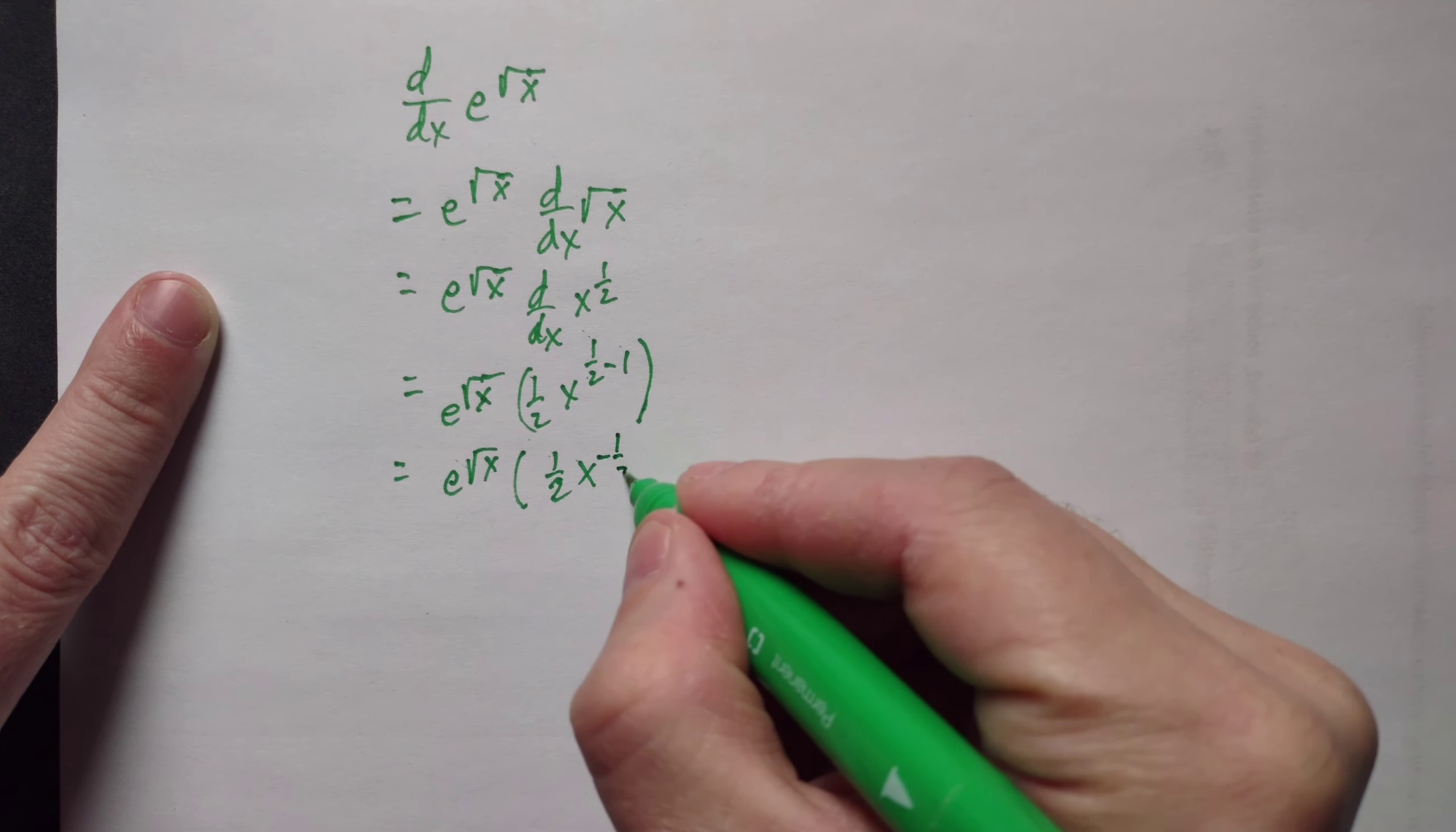And then you can apply the power rule to that part. So it's e to the root of x, and this becomes 1 half by the power rule for derivatives, x raised to the 1 half minus 1, and then you work with that.